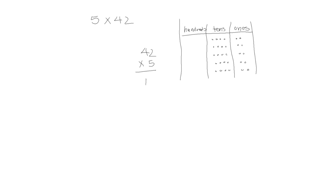We have 10 ones — that is our first partial product. In the tens we have 4, 8, 12, 16, 20 tens, which is 200. So if we add those together, we get 210.